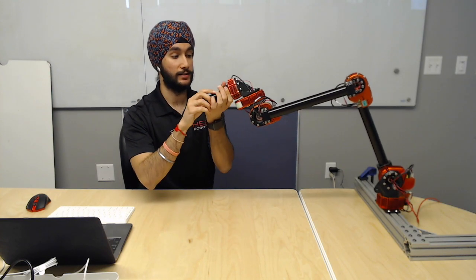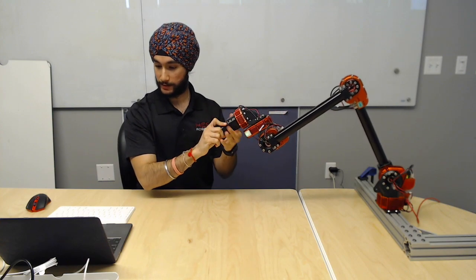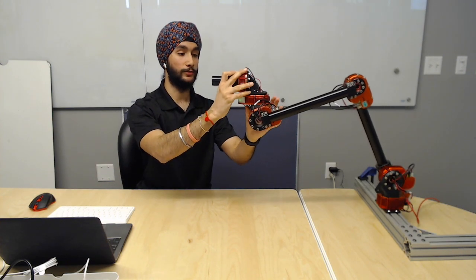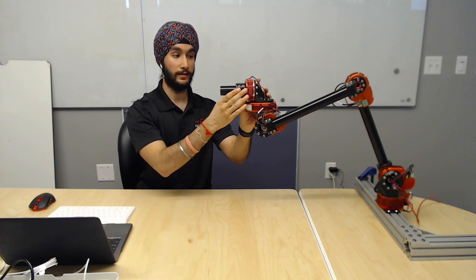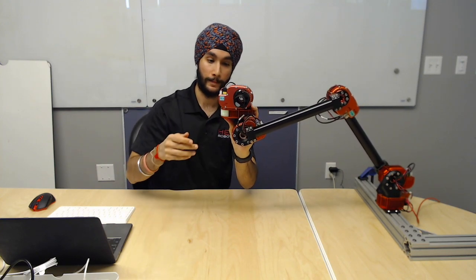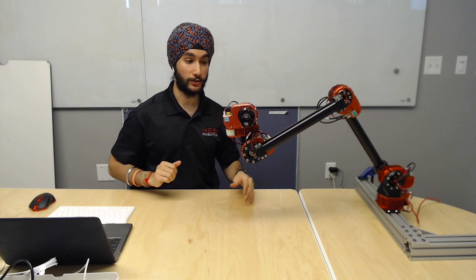But to hold an orientation of the end effector. So the end effector, once I set it to, for example, if I send the end effector to always be facing, let's try the camera.